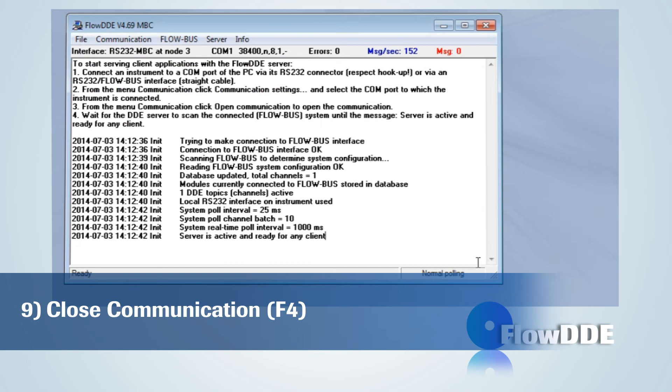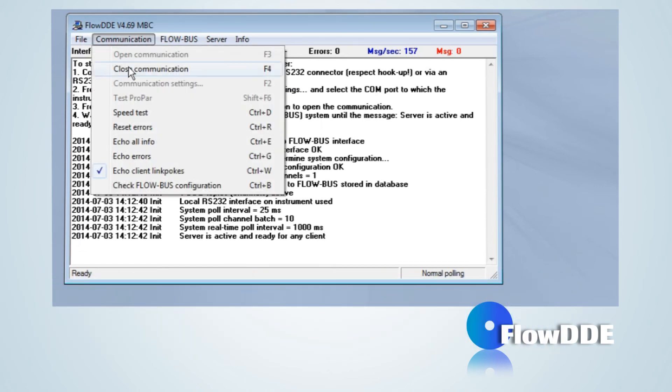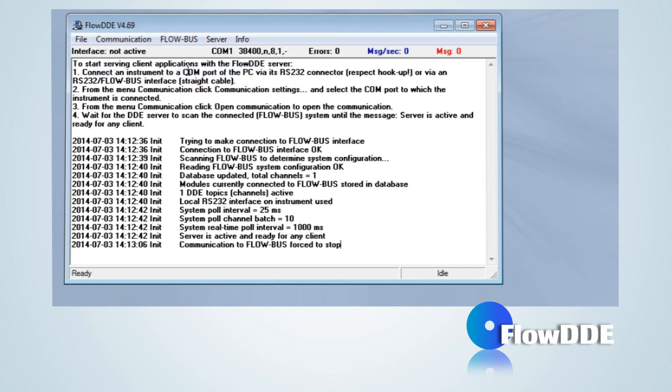Communication to the instrument can be stopped via the menu. Communication, Close Communication. Polling is stopped, all DDE items are terminated, and clients can no longer set or get parameter values.